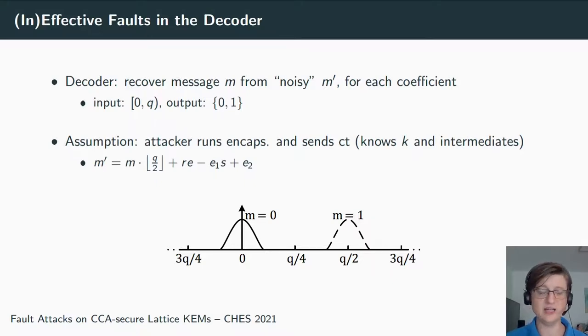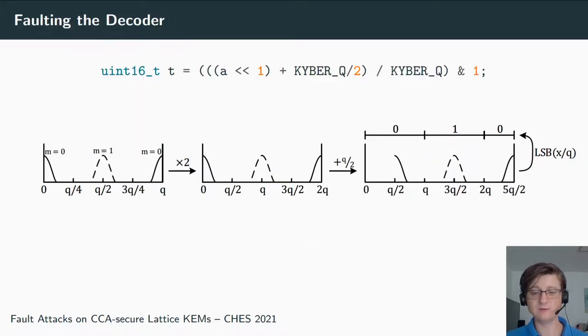Now, if we have a look at this equation which turned up during decryption—m' = m·q/2 + r·e - e1·s + e2—a lot of these terms that are in there are known to the attacker, namely the message, r, e1, and e2. Only two polynomials in there, e and s, are unknown, and this is the secret key. So this means if we learn some information on this m', apart from the fact if it decodes to a zero or a one, then we have information that is linear in the secret key.